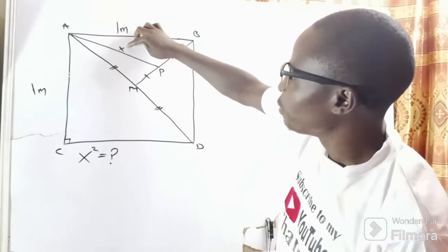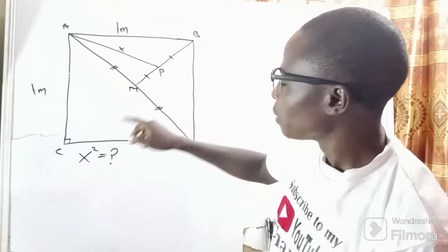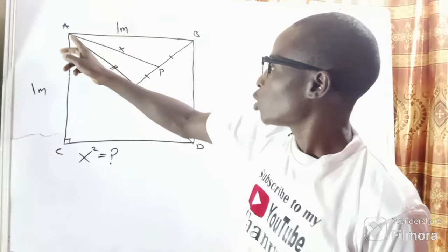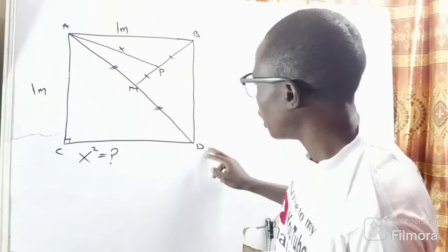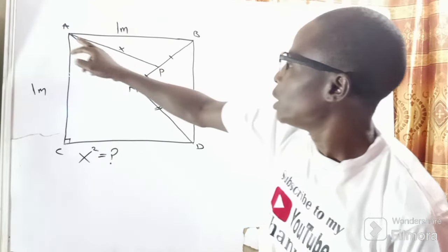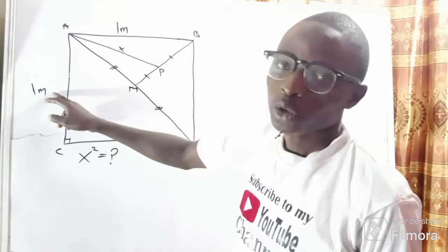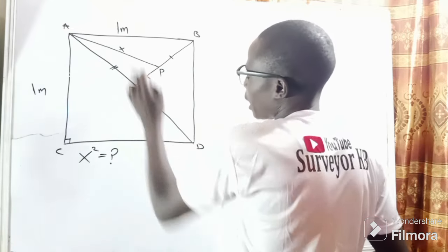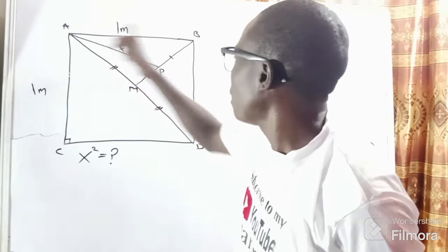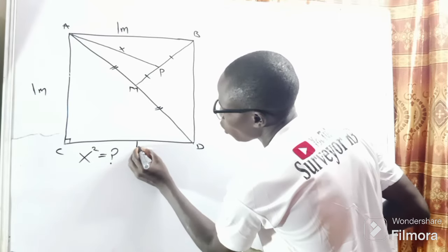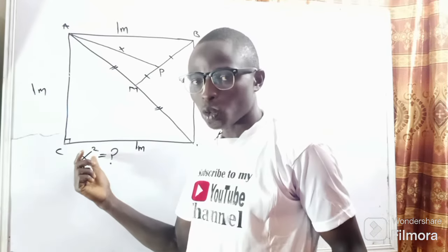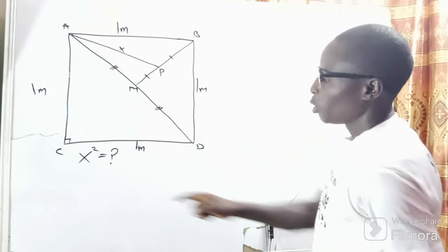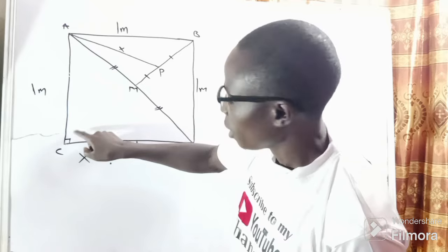Our mandate is to find the value of x squared — this distance AP, which is x. This is a rectangle or square with supplied parameters A, B, C, and D, and point P and M. We have line AB equal to one meter and AC equal to one meter. This clearly shows AB equals CD, so that line is also one meter. Our mandate is to find x squared, the square of this line.